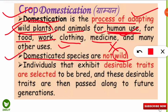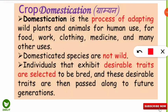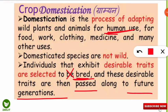Individuals that exhibit desirable traits are selected to be bred. For example, if any plant fruit has more sweetness, we breed it with the local variety that has less sweetness, taking it from the wild variety and breeding with local varieties, then passing along the trait to future generations to meet human needs.